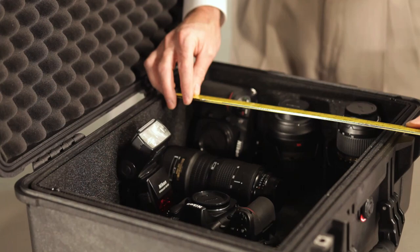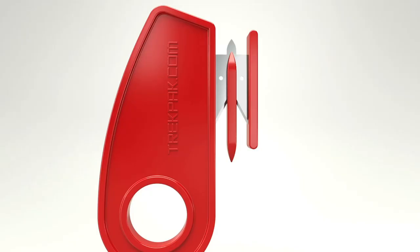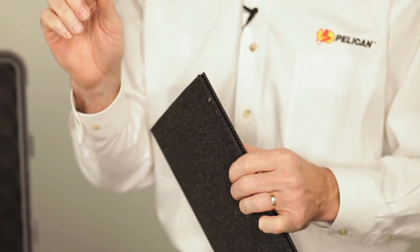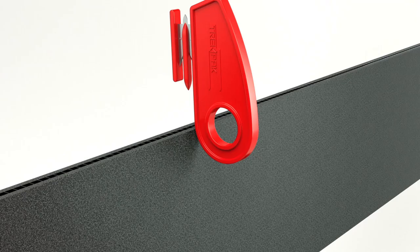TrekPak comes with a foolproof cutting tool that has a center pin for aligning your cut. Just place the pin into the slot nearest your mark, and pull. You get a perfectly straight cut every time.